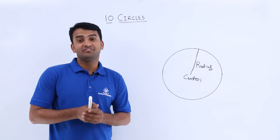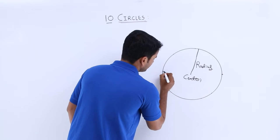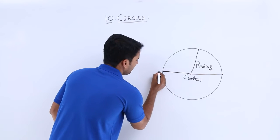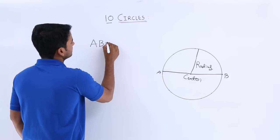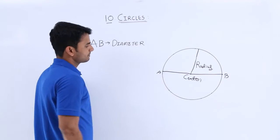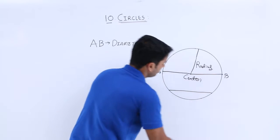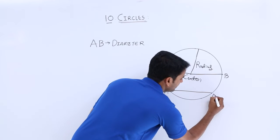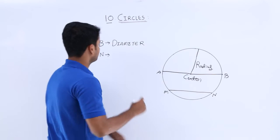And we also know the various terms of circle. For example, here, if I take two points on circle and join them with a line, let's consider them as point M and point N. Here, this line M N is considered as a chord.